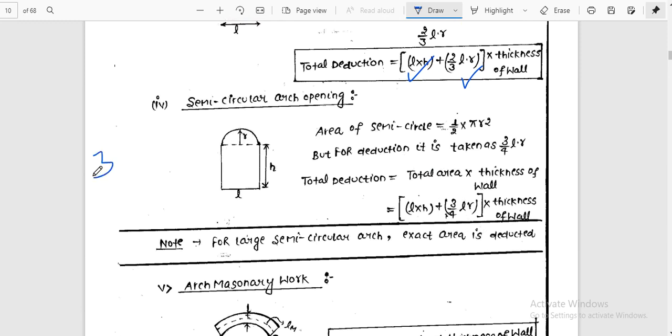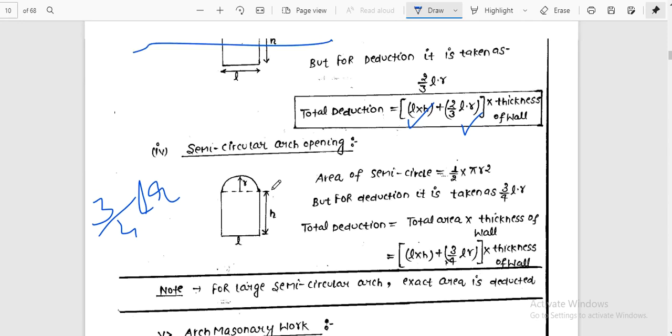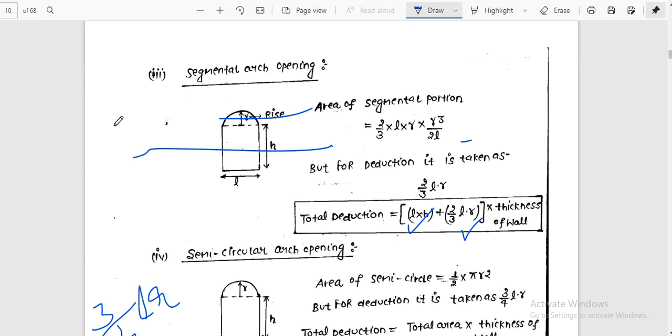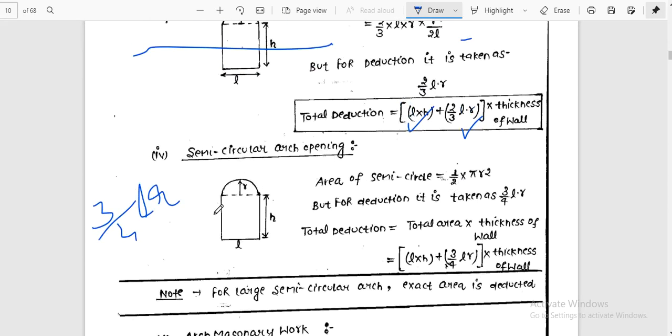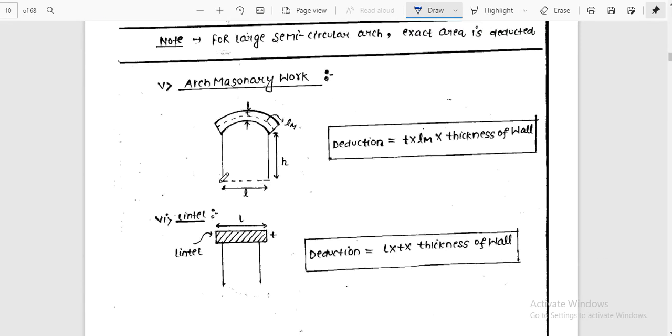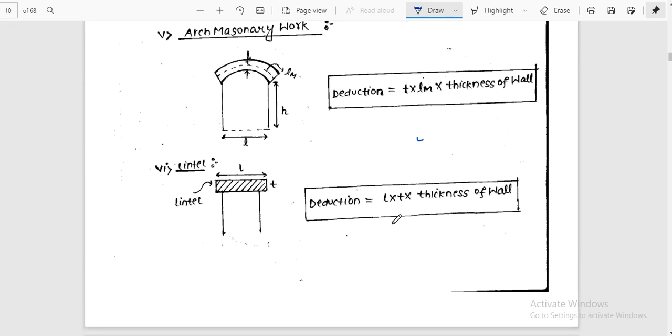For semi-circular arc openings, the formula is π/4 LR because it is circular in shape. For arc masonry work, it's T into LM where LM is height, into thickness of the wall. For lintel, it's L into T into thickness of the wall.